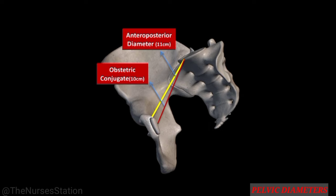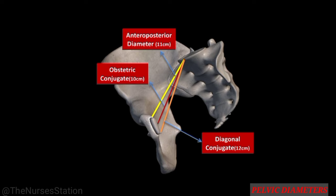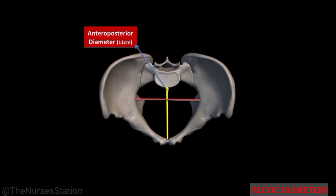The obstetric conjugate is the distance from the midpoint of the sacral promontory to the prominent bony projection on the inner surface of the symphysis pubis, measuring about 10 centimeters. The diagonal conjugate is the distance from the lower border of the symphysis pubis to the midpoint on the sacral promontory, measuring 12 centimeters. Only the diagonal conjugate can be measured directly by pelvic assessment in late pregnancy or labor. The obstetric conjugate is obtained by subtracting 1.5 to 2 centimeters from the diagonal conjugate, and the true conjugate by subtracting 1 centimeter.